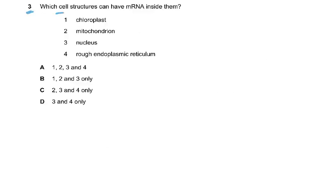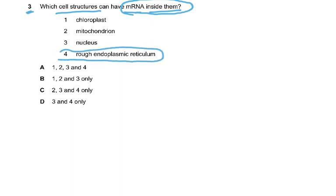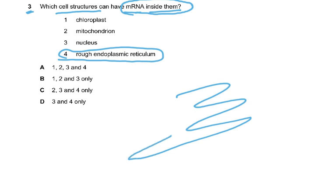Question 3: Which cell structures can have mRNA inside them? The word 'inside' is a catch here. Structure 4, the rough endoplasmic reticulum, cannot have mRNA inside it because the ribosomes are on the outside surface of the RER.